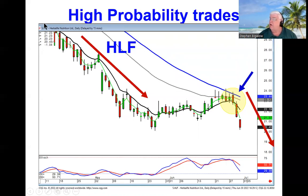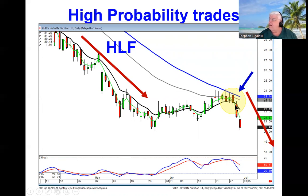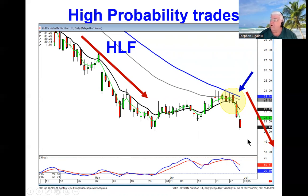Notice Herbalife in a strong downtrend — came back up smack dab to the 50-day moving average, did a bearish engulfing signal. We recommended shorting this because essentially we've got a wave one, wave two, where we can see exactly where they started selling again, going into a high probability wave three.